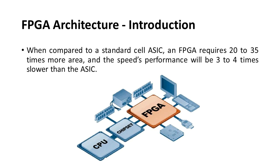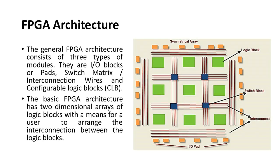When compared to a standard cell ASIC, an FPGA requires 20 to 35 times more area and the speed performance will be three to four times slower than the ASIC. The general FPGA architecture consists of three types of modules: I/O blocks or pads, switch matrix or interconnection wires, and configurable logic blocks (CLB).